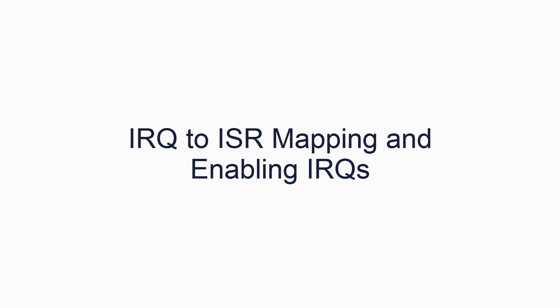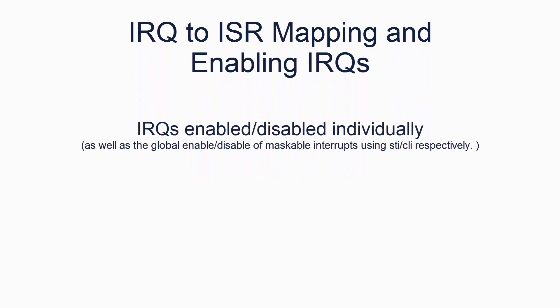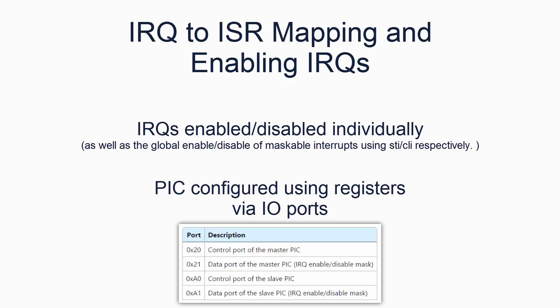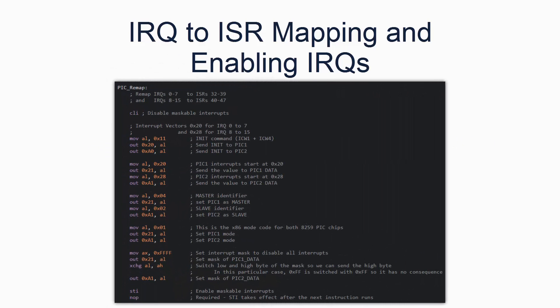Let's look at how we enable interrupts from the PIC and how we configure the mapping. IRQs can be enabled and disabled individually. A disabled IRQ simply isn't passed to the processor if it is received, so from our perspective it never occurs. The PIC is configured using registers which are at the other end of IO ports — remember those things we discussed way back in the first couple of tutorials. So to set values in the PIC registers, we send the PIC a command which tells it which register to set, and some data which tells it what to set the register to. Here is the sample code for remapping the PIC, followed by sample code for enabling and disabling particular IRQs. For our OS, we only want to enable the timer and keyboard IRQs, which are IRQs 0 and 1.